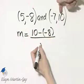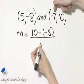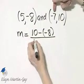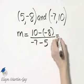Now if I start with this y in the numerator, I must start with this x in the denominator. So, over x minus x, and let's simplify.